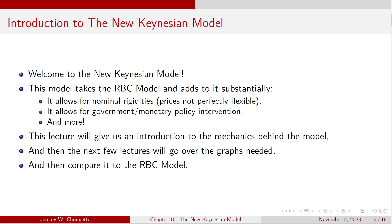It also assumes that there is monopolistic competition in the markets, which gives firms a little bit of pricing power. It's actually an assumption that's required for the model to really work. This lecture is going to give us an introduction to the mechanics behind the model, and the next couple of lectures are going to go over the graphing — if you remember the four-graph system with the real business cycle model, it's going to be very similar just with the New Keynesian model instead.